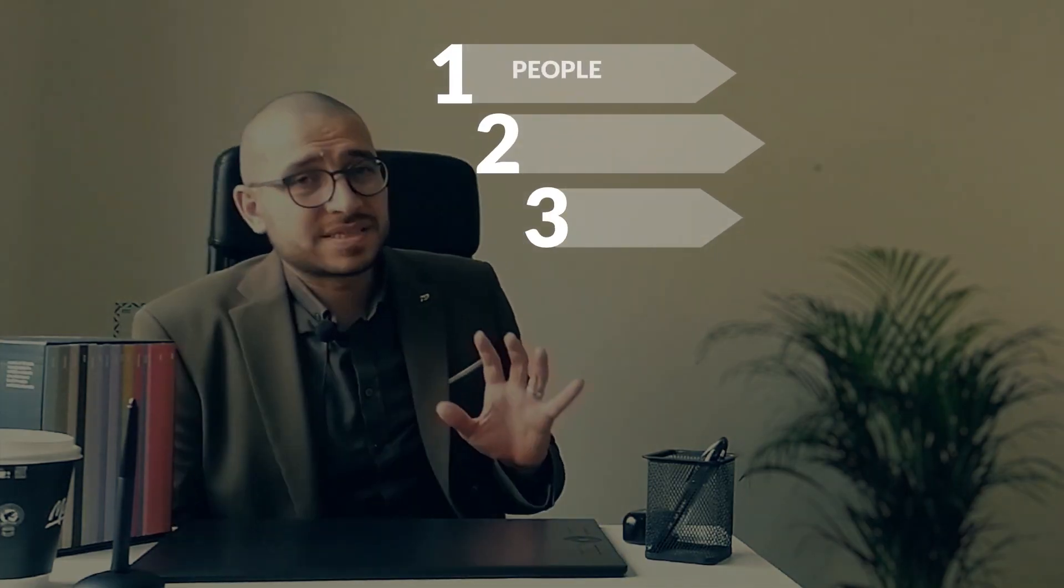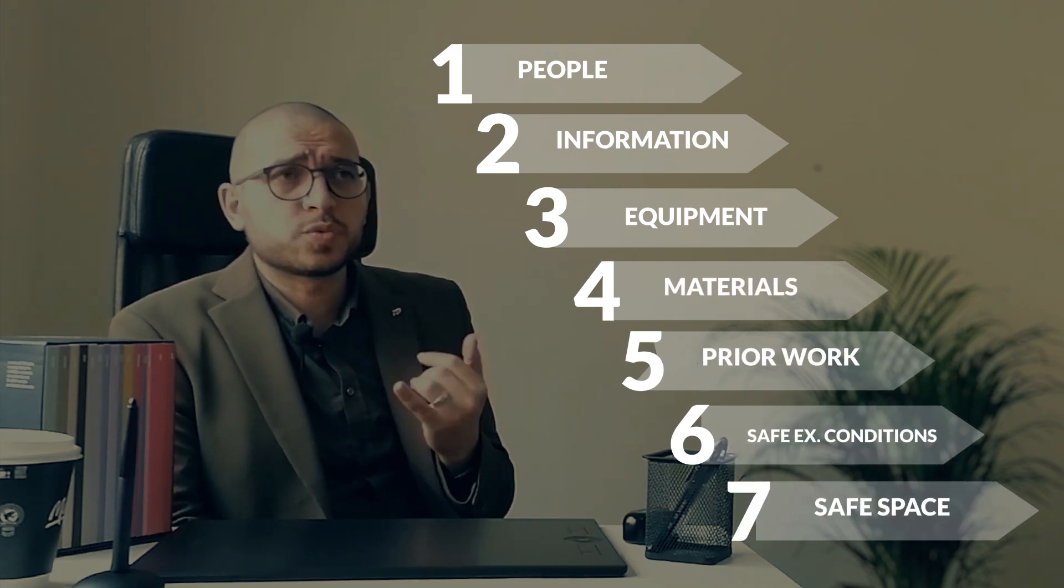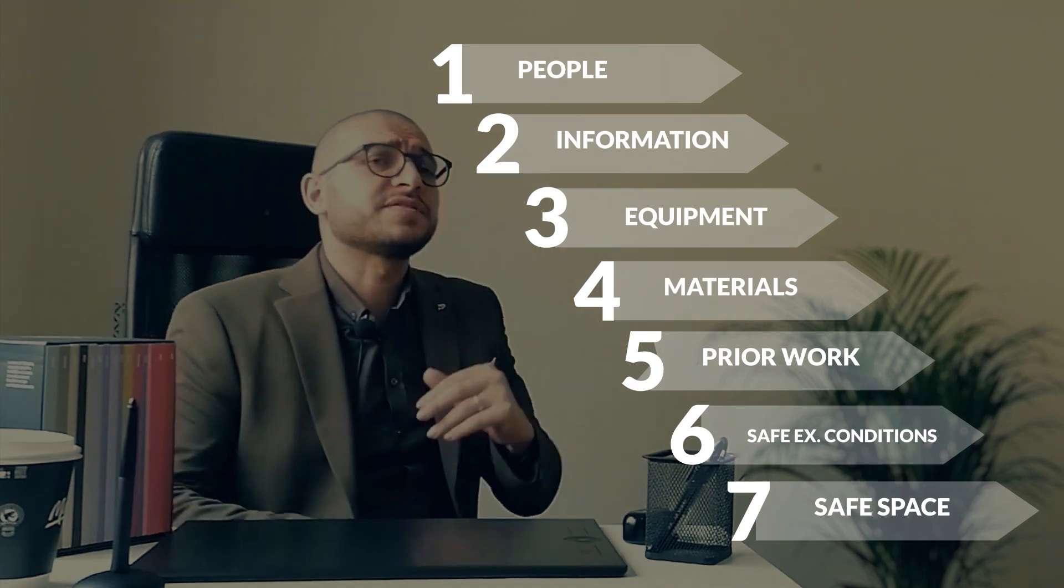There are seven flows in construction: people, information, equipment, materials, previous work safe, external conditions, and safe space.